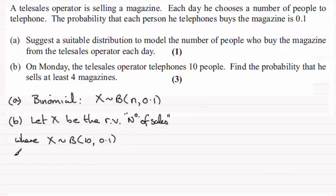So what we've got to do then is work out the probability he sells at least four magazines. That's going to be the probability that X is greater than or equal to 4. And to do this, I'm going to do 1 minus the probability of X being less than or equal to 3. And we can get this answer for the probability of being less than or equal to 3 very easily just by looking up in the cumulative binomial distribution tables.